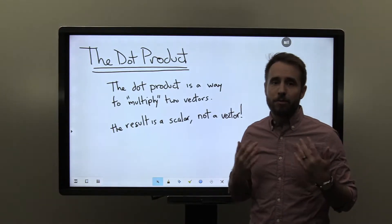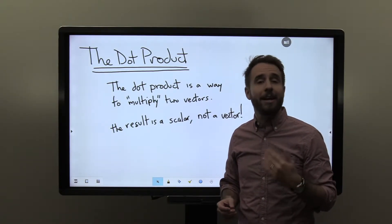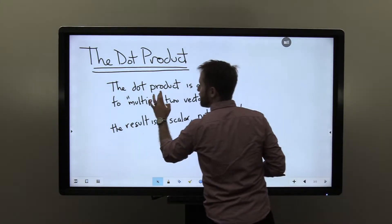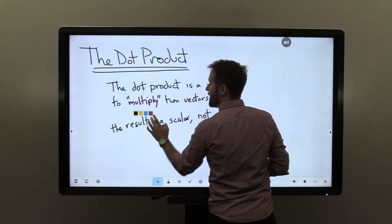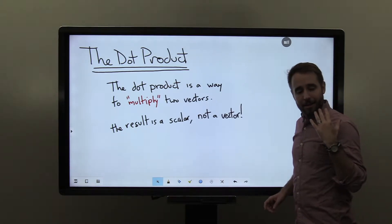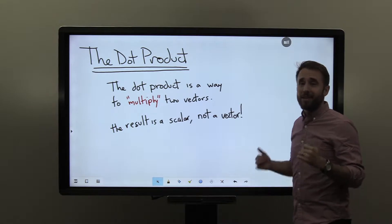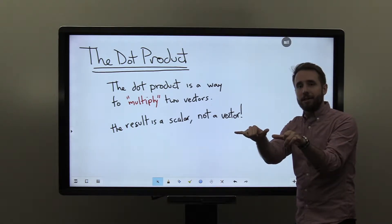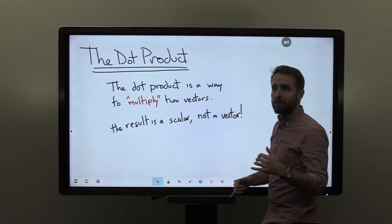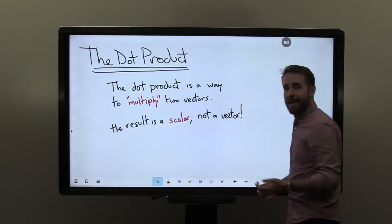We did not talk about vector multiplication, and I want to be a little careful about the use of the word multiplication. I'm going to make sure that when I say multiplication here, I am saying it with quotation marks. The reason is that the dot product works kind of like multiplication, but it's a little funny. In particular, we take two vectors as inputs, but the output is not a vector — we'll take two vectors, take their dot product, and the result will actually be a scalar instead.